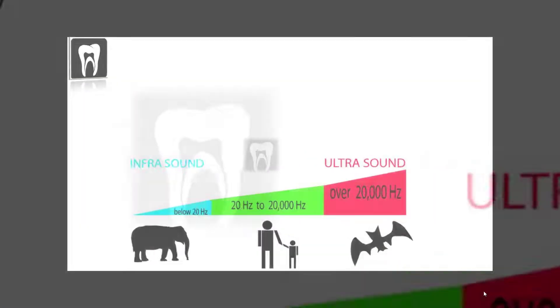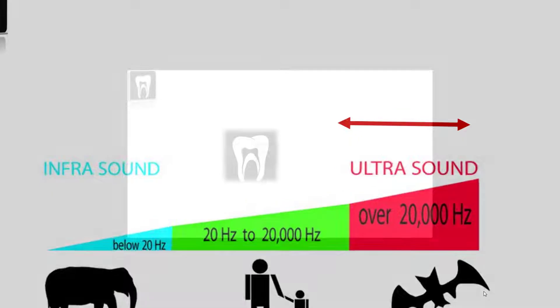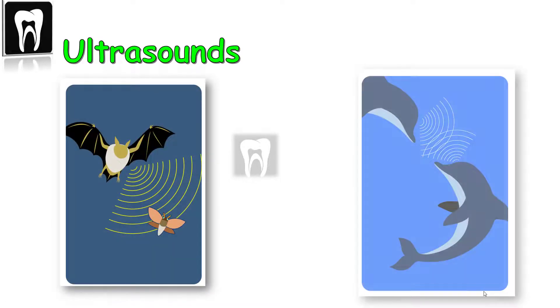The human ear cannot hear above 20,000 Hertz. Frequency above 20,000 Hertz are called ultrasound. Bats use ultrasounds to locate foods and dolphins use it to communicate with their friends.